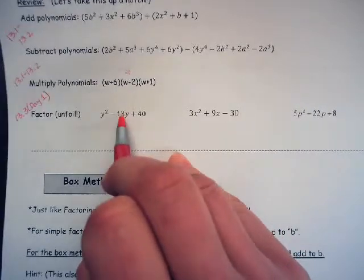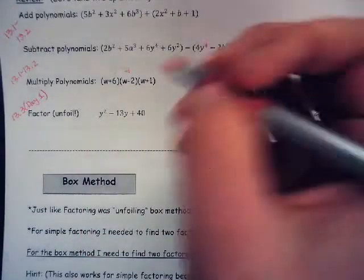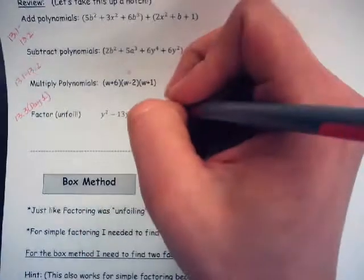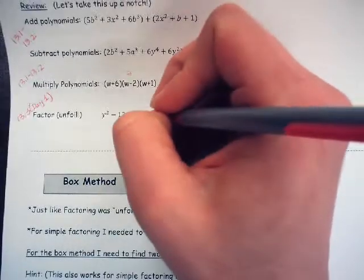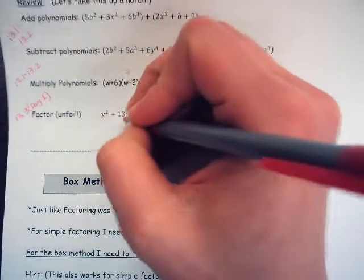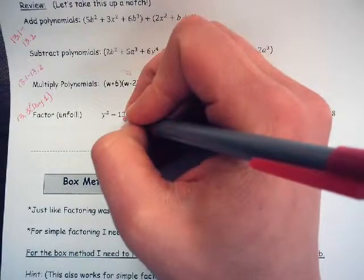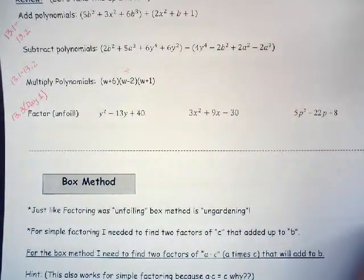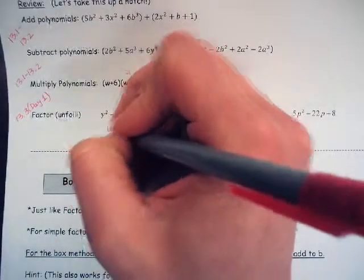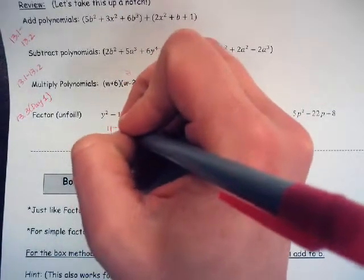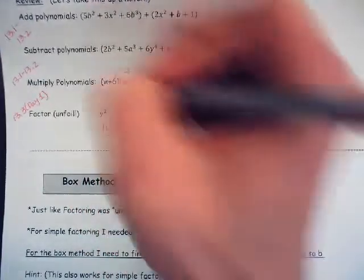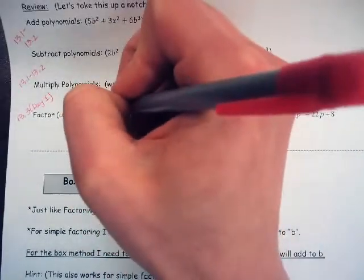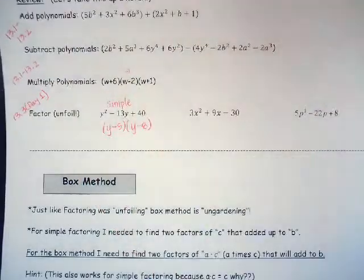If I take two factors of 40 that are going to add together to give me 13, I think right off the bat that 8 times 5 gives me 40, and negative 5 plus negative 8 gives me negative 13. So I can say y minus 5 times y minus 8 — that's our simple factoring method, the easiest one.